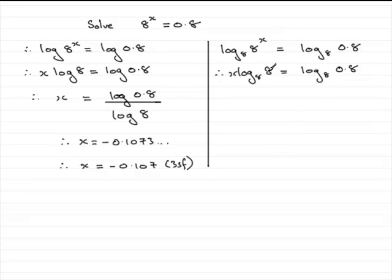Now you should know that any number in its own base is going to be 1, because 8 to the power 1 gives you this number here 8. So if you know that you could just write that simply as x equals the log in base 8 of 0.8.